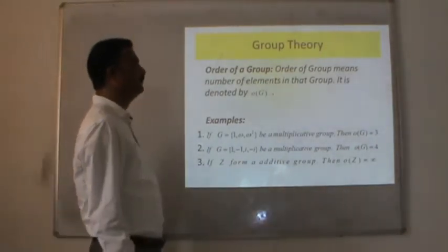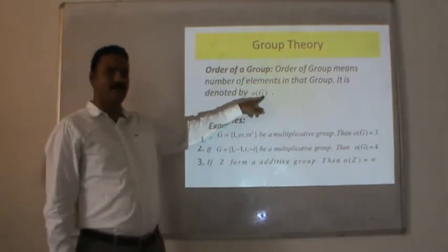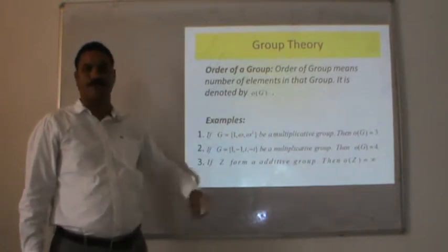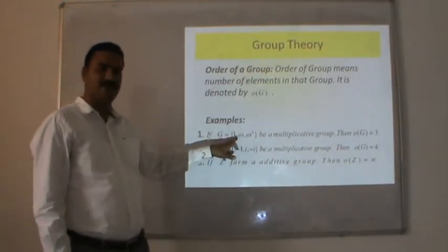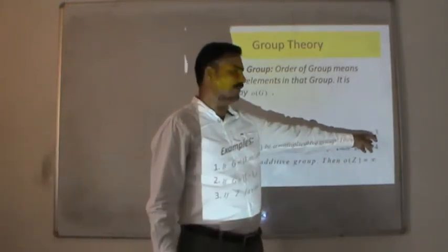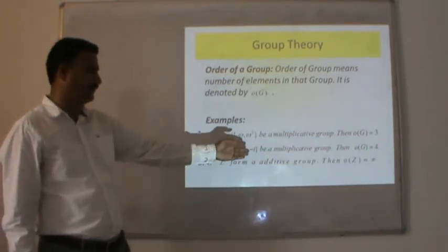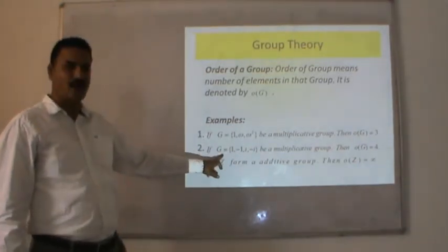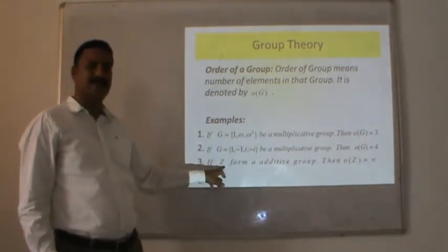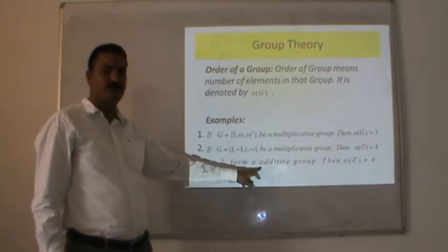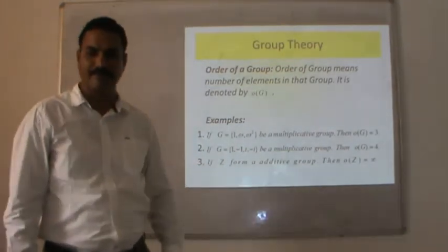Order of a group: the order of a group means the number of elements in that group, denoted O(G). For example, G = {1, ω, ω²} is a multiplicative group with 3 elements, so order of G is 3. For G = {1, −1, i, −i}, order of G is 4. For Z with additive operation, the order of Z is infinity since the set of integers contains an infinite number of elements.